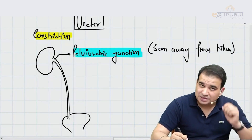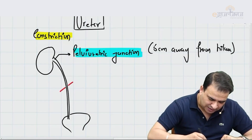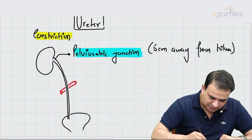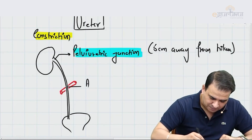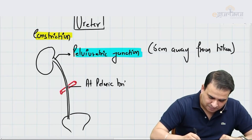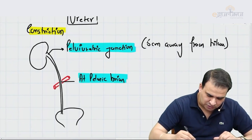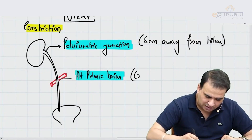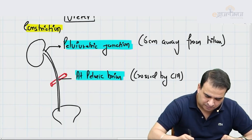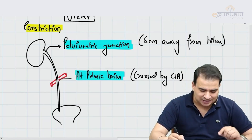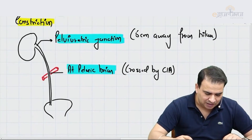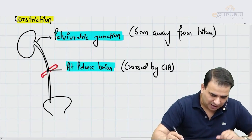The second constriction is caused by the crossing of the common iliac artery. It is present at the pelvic brim, where the ureter is crossed by the common iliac artery.